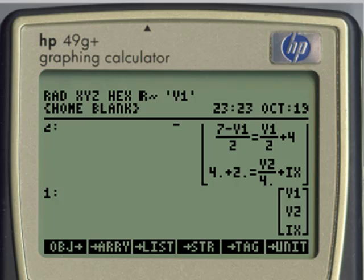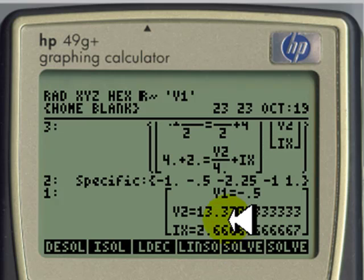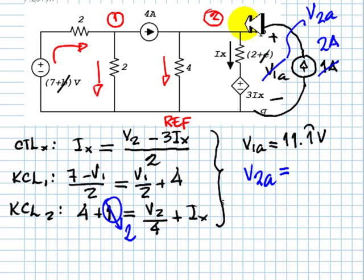We are ready to solve the system again now with 2 amps there. Solve the linear system. And the solution for V2 is 13.3 periodic, and that is V2A. This V2, 13.3 periodic, is now V2A.